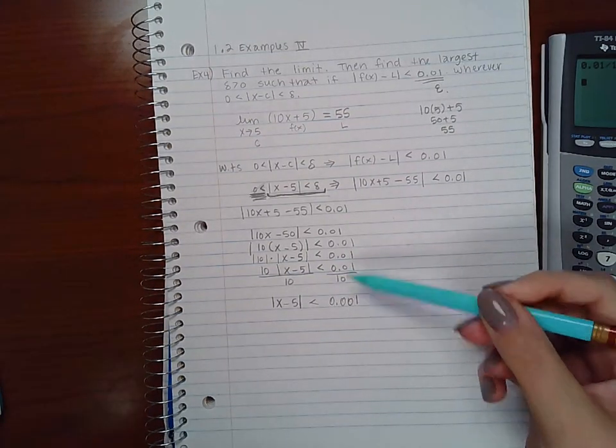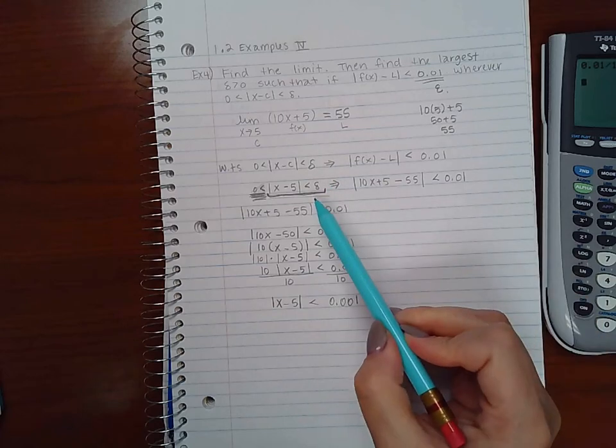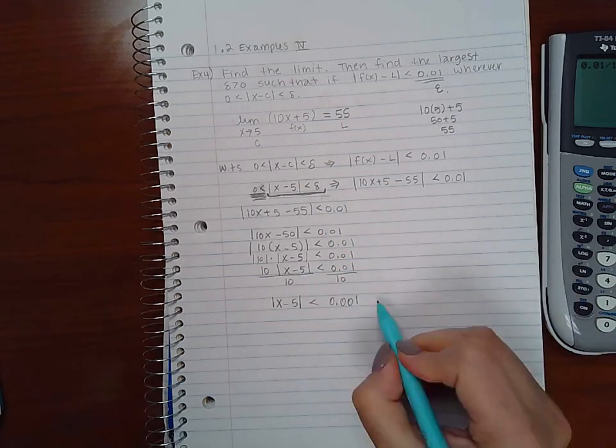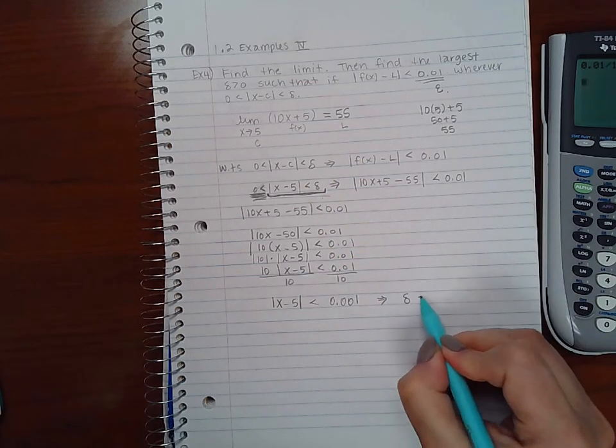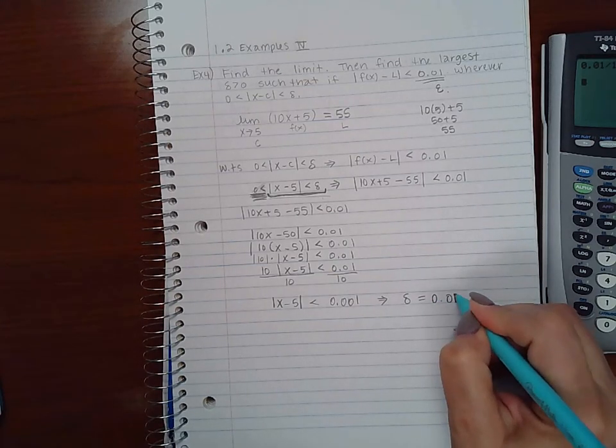This statement looks a lot like that statement, except now I know what delta has to be. Delta has to be 0.001.